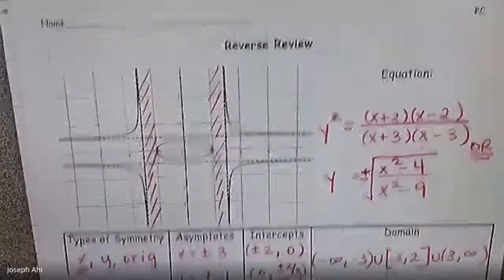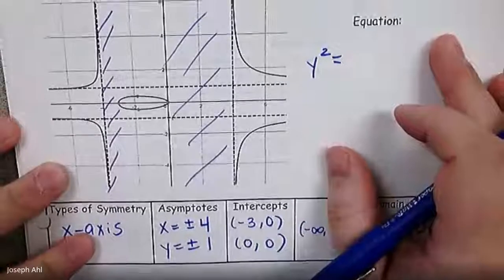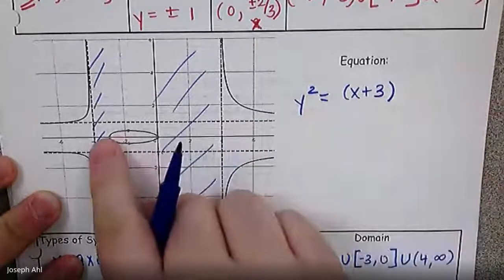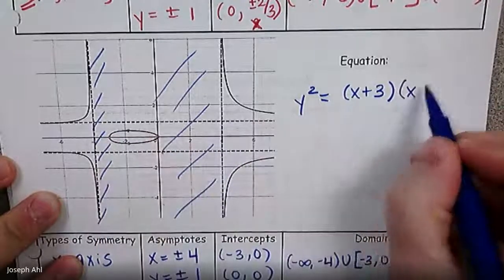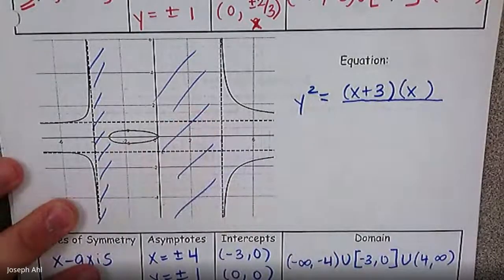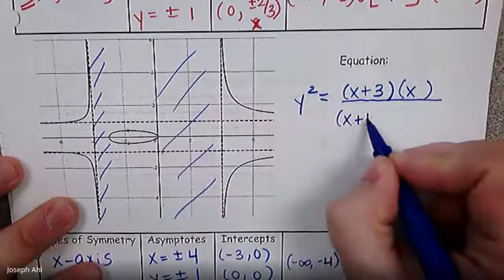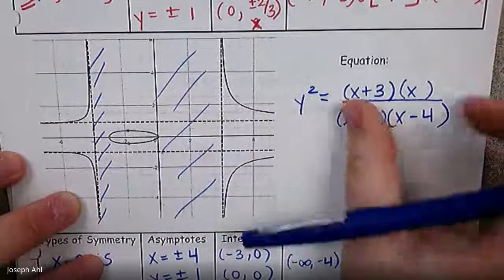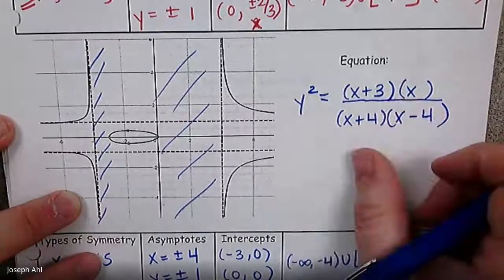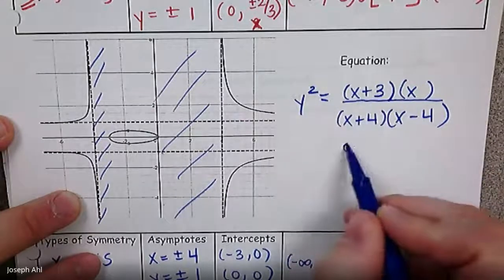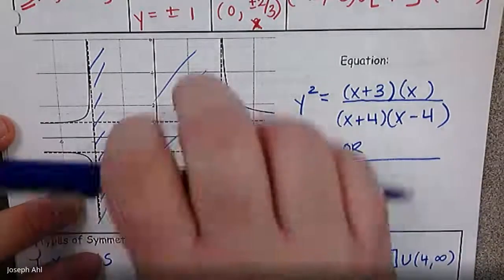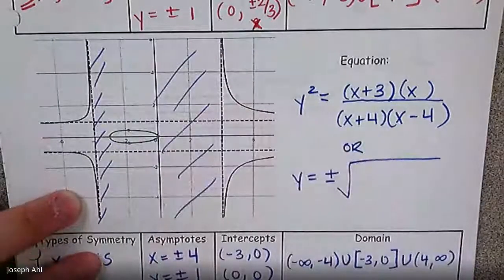How do we write the equation? Thinking about the numerator — x-intercepts are at negative 3 and zero. So x plus 3 is the factor for the root at negative 3, and just x gives the root at zero. The denominator comes from the vertical asymptotes, so that's x plus 4 times x minus 4. I like leaving it in factored form. Remember, it's either y squared equals that fraction, or y equals plus or minus the square root of it. If you go with y alone, you must put the plus or minus out front, or you'd only get half the graph.